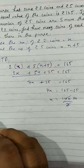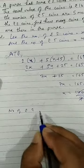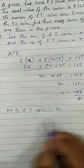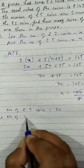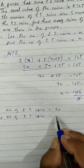Now we can write here number of rupee 2 coins equals to 20.